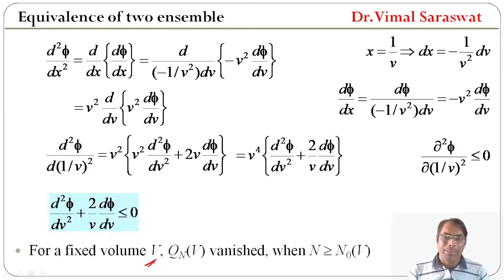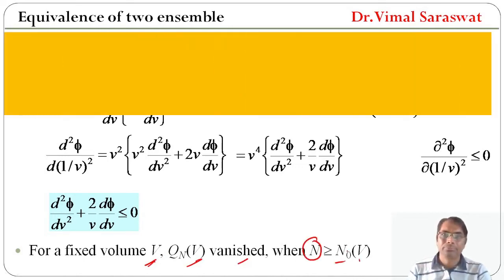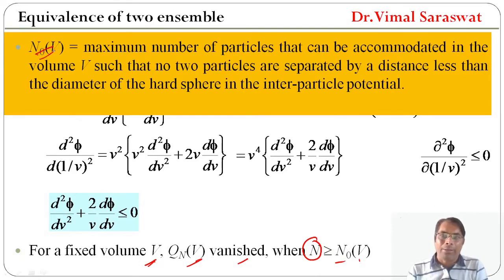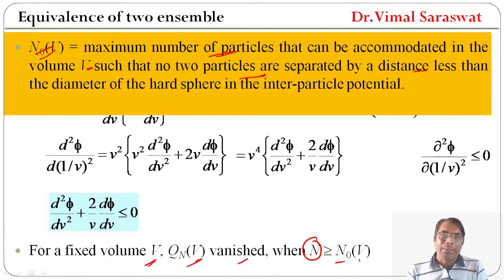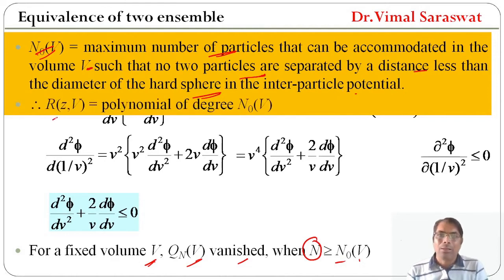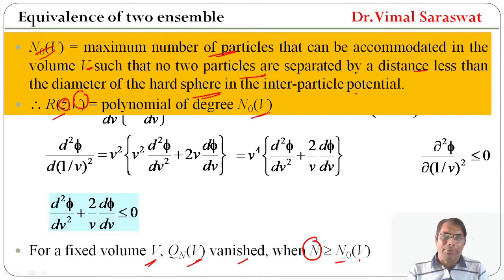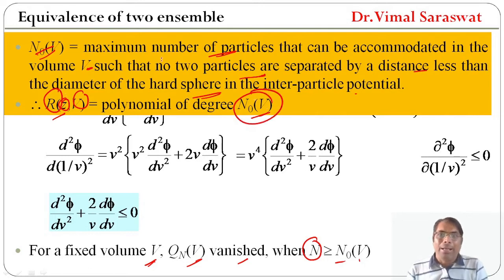For a fixed volume V, Q(n,V,T) vanishes when n is greater than or equal to n₀(V). Here, n₀(V) is the maximum number of particles that can be accommodated in a volume V such that no two particles are separated by a distance less than the diameter of the hard sphere in the inter-particle potential. Therefore, r, which is a function of z and V, is a polynomial of degree n₀(V).